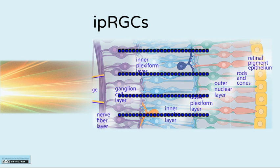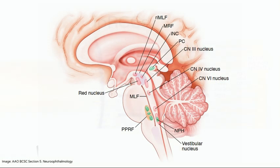These retinal ganglion cells are densest in the central retina, where they have more of a one-to-one relationship with the photoreceptors and bipolar cells compared to the periphery. These ganglion cells constitute not more than one percent of the total number of ganglion cells. The axons of these ganglion cells travel in the nerve fiber layer of the retina to enter the optic nerve.